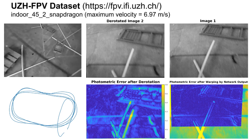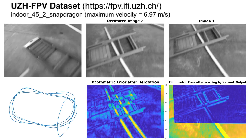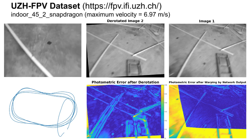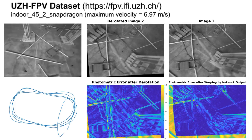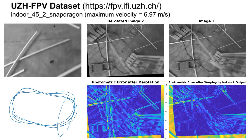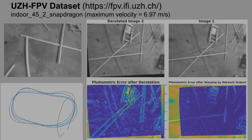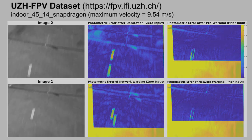The network is also tested on a public high-speed flight dataset. It performs well when there are big visual disparities, motion blur, and even scenes that are not perfectly planar. We found that in the existence of big visual disparities, the accuracy increases when the previous prediction is used as the initial guess.